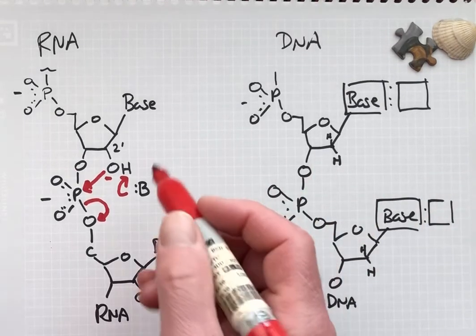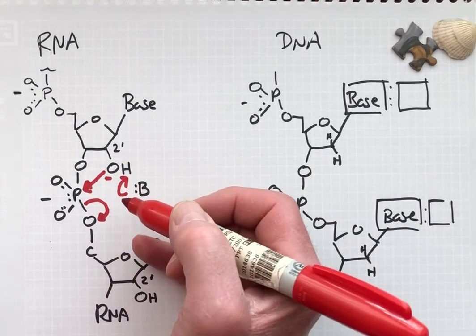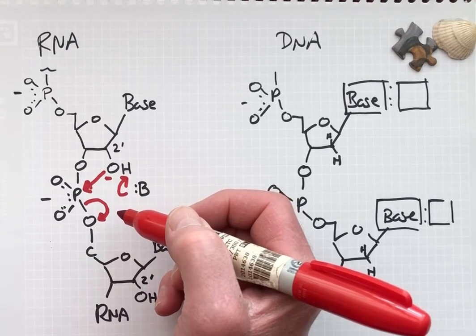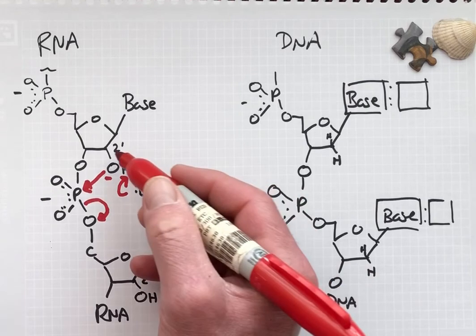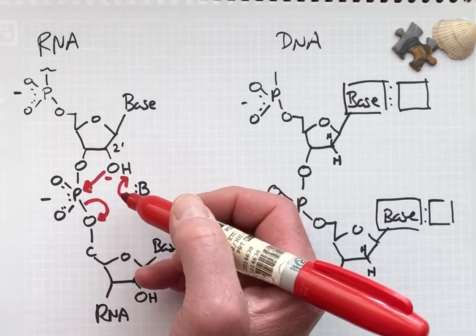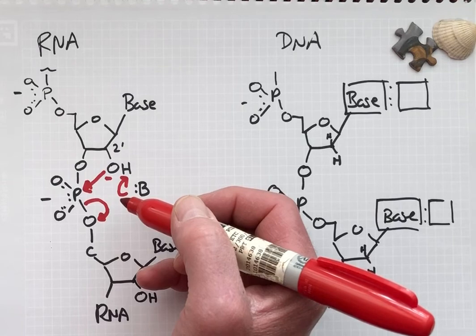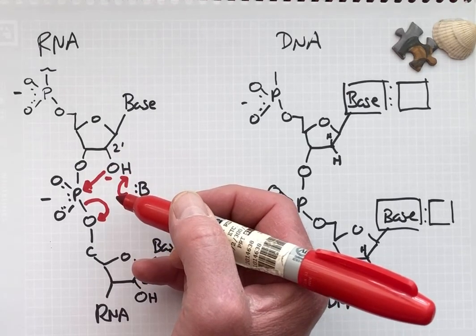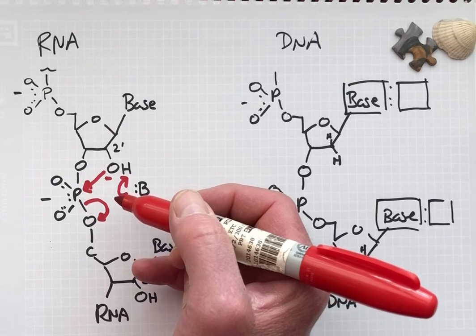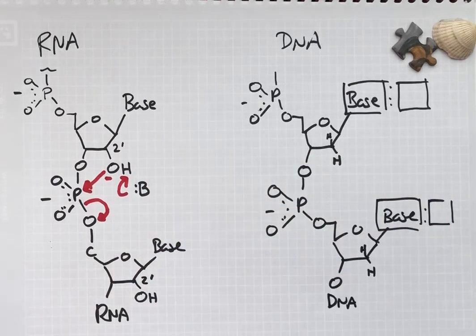We'll also see how this two prime hydroxyl participates in intron removal. It's the nucleophile in the first transesterification reaction where the branch point two prime hydroxyl attacks the phosphorus group at the five prime splice site.